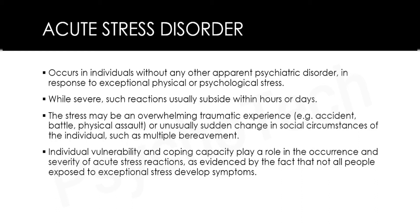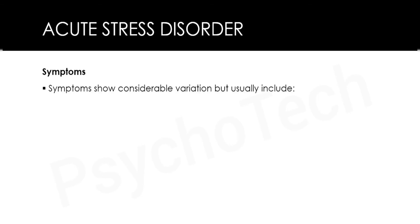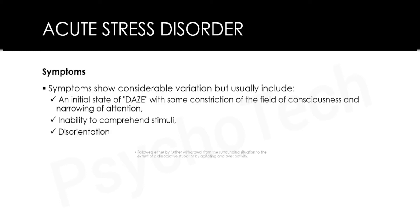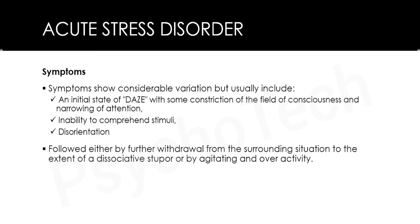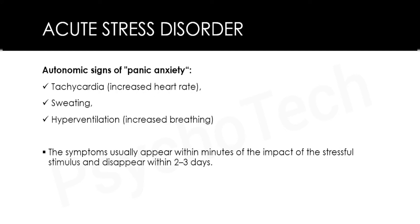Not all people exposed to exceptional stress develop symptoms. The symptoms of acute stress disorder show considerable variation but usually include an initial state of daze with constriction of the field of consciousness and narrowing of attention, inability to comprehend stimuli, and disorientation, followed by either further withdrawal into dissociative stupor or by agitation and overactivity. Autonomic signs of panic anxiety include tachycardia (increased heart rate), sweating, and hyperventilation. Symptoms usually appear within minutes of the stressful stimulus and disappear within two to three days.